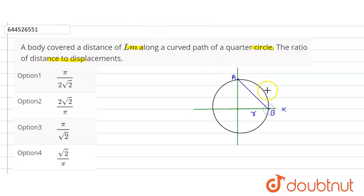Okay, so we have to find the distance and displacement ratio. In quarter circle, displacement will be this one, A to B, and distance will be this path when this moves from this path.